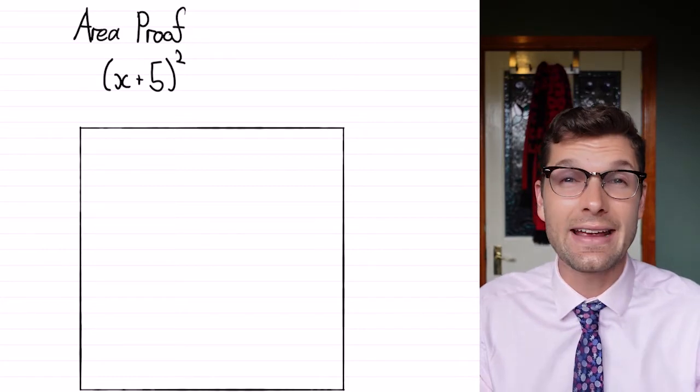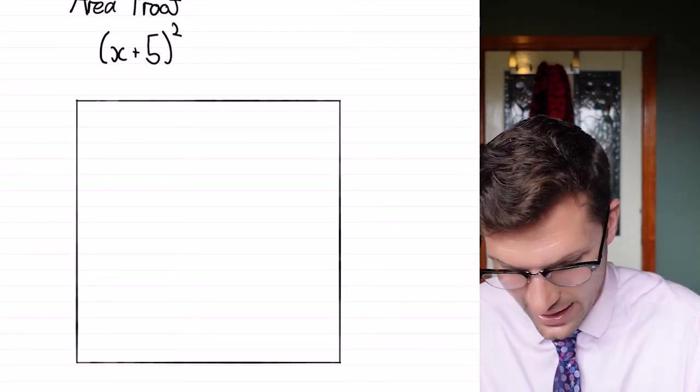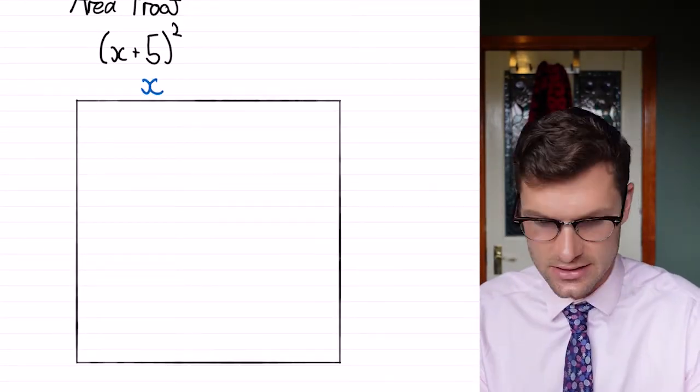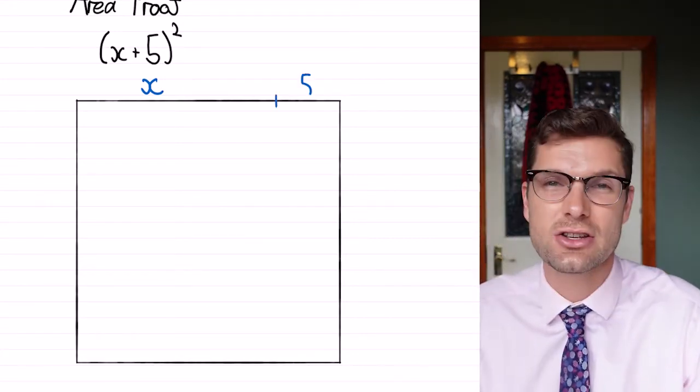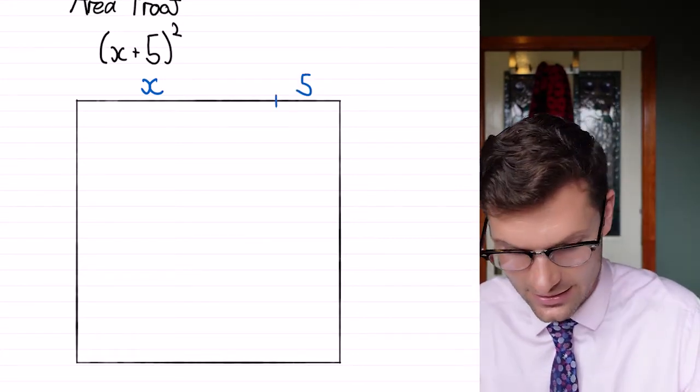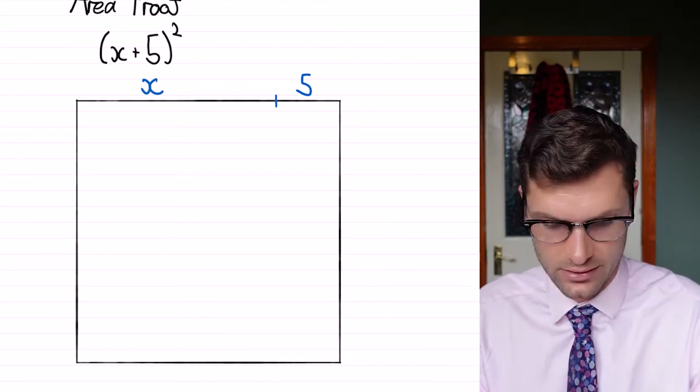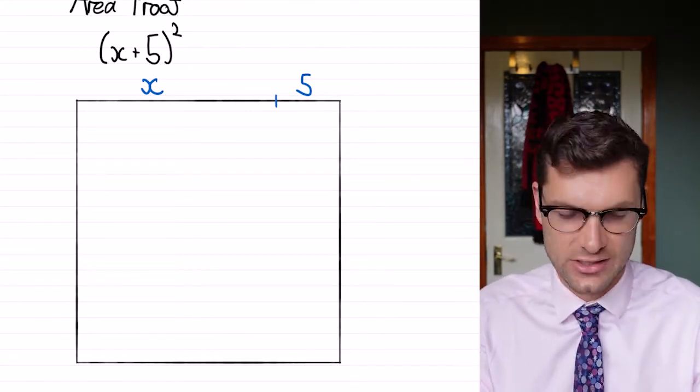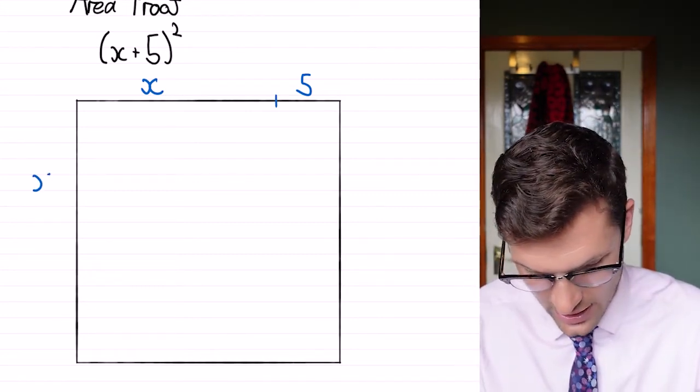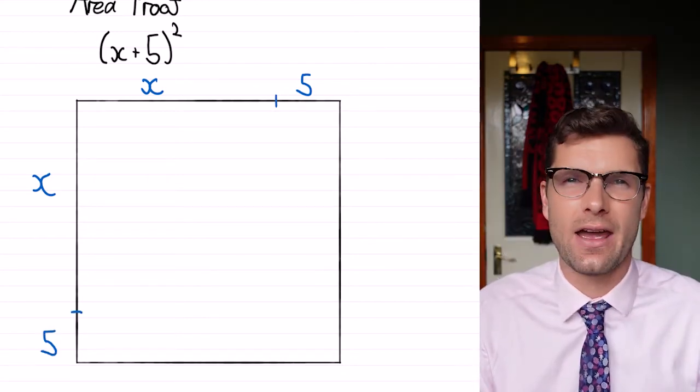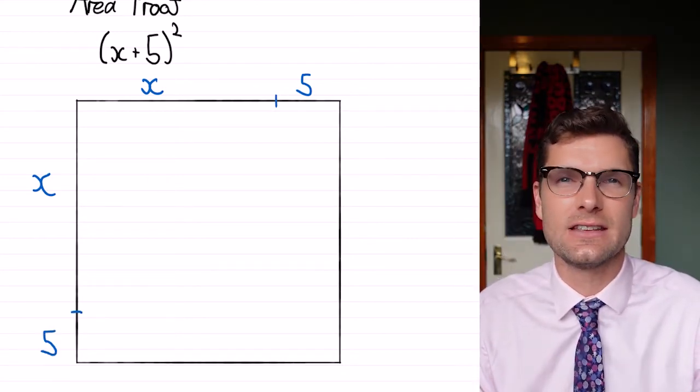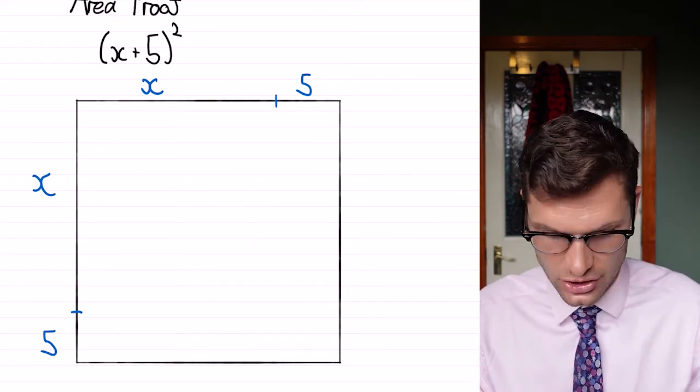So the length of this is going to be x, is going to be some distance, and we're going to have 5. So that whole top length there is x plus 5. And that's going to be on both sides, because we are squaring. So to find out where the area comes from in this square, we're going to add up the components of each section.